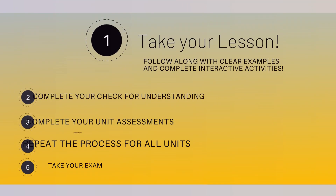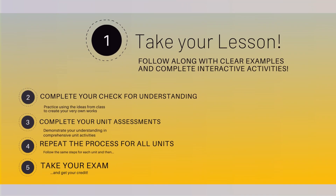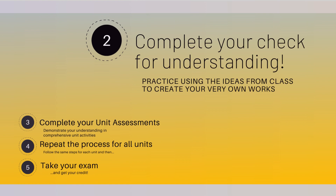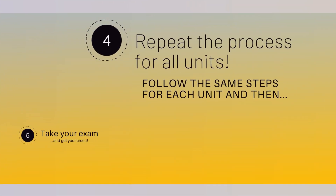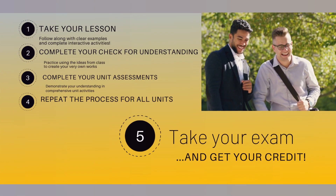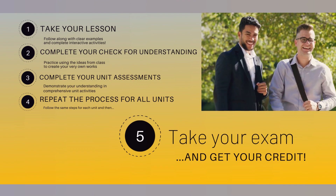So, how does the course work? First, take your lesson — you will follow along with clear examples and complete interactive activities. Second, complete your check for understanding — practice using the ideas from class to create your very own works. Third, complete your unit assessments — demonstrate your understanding in comprehensive unit activities. Fourth, repeat the process for all units. Follow the same steps for each unit and then take your exam and get your credit.